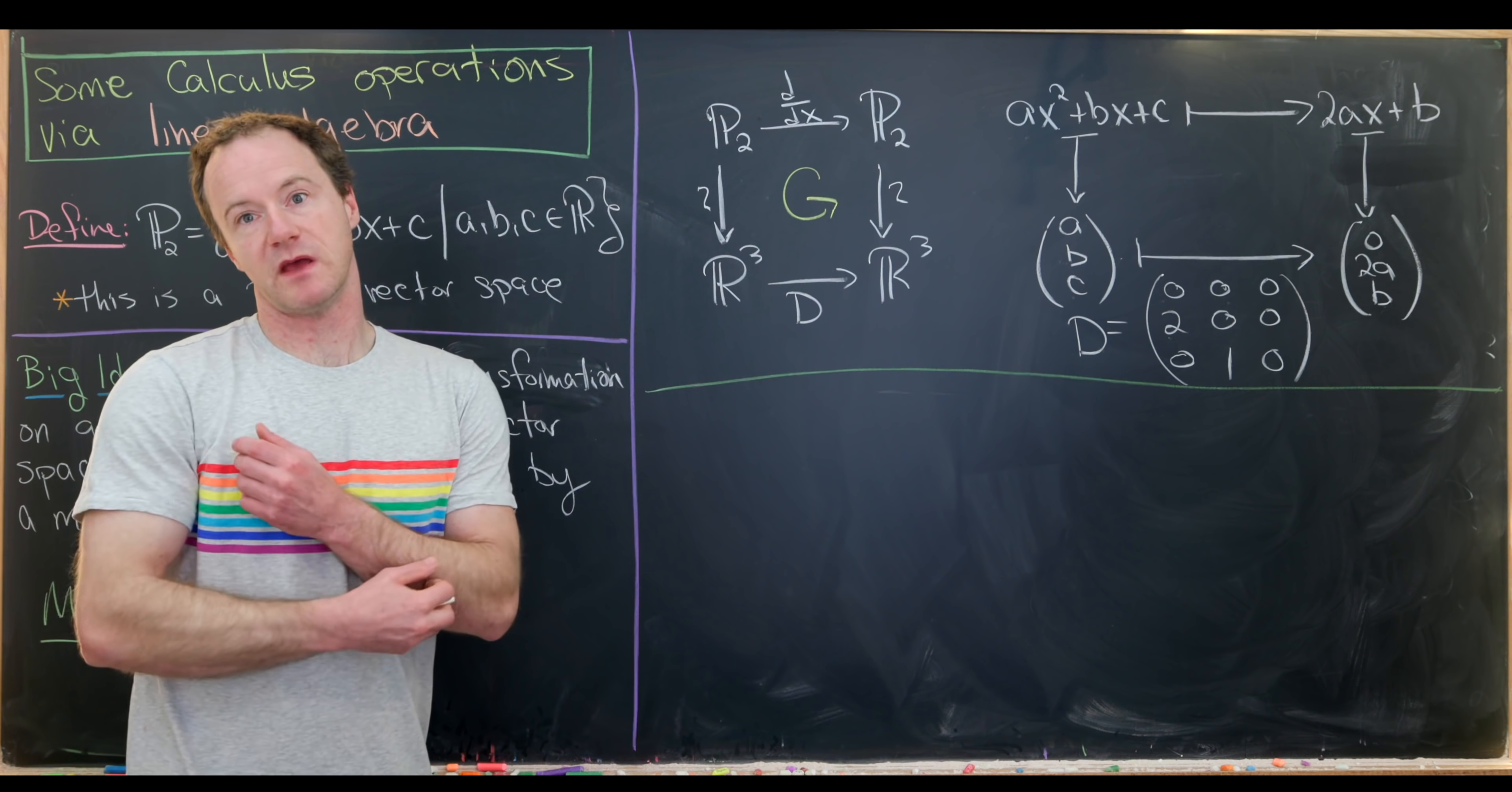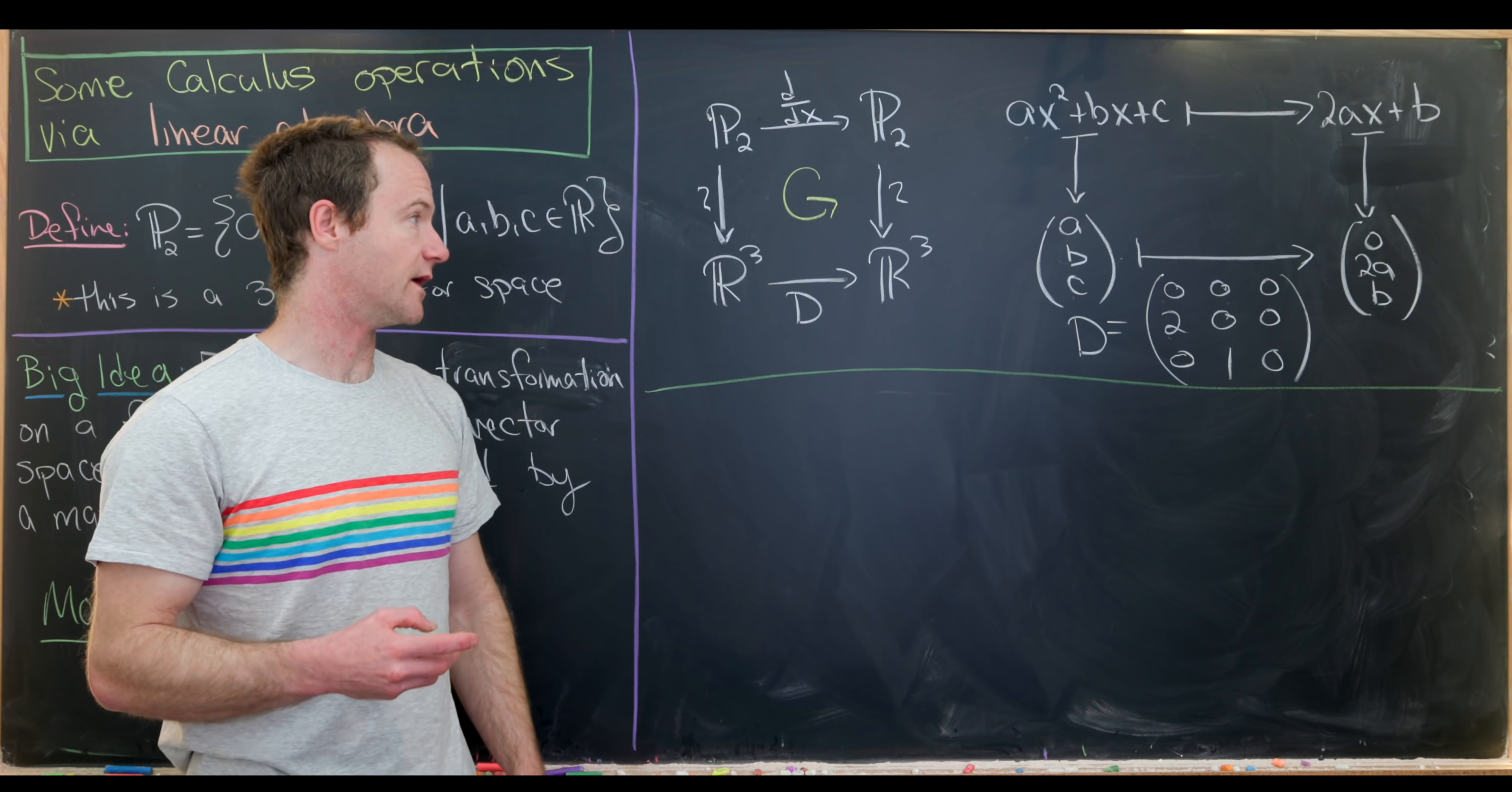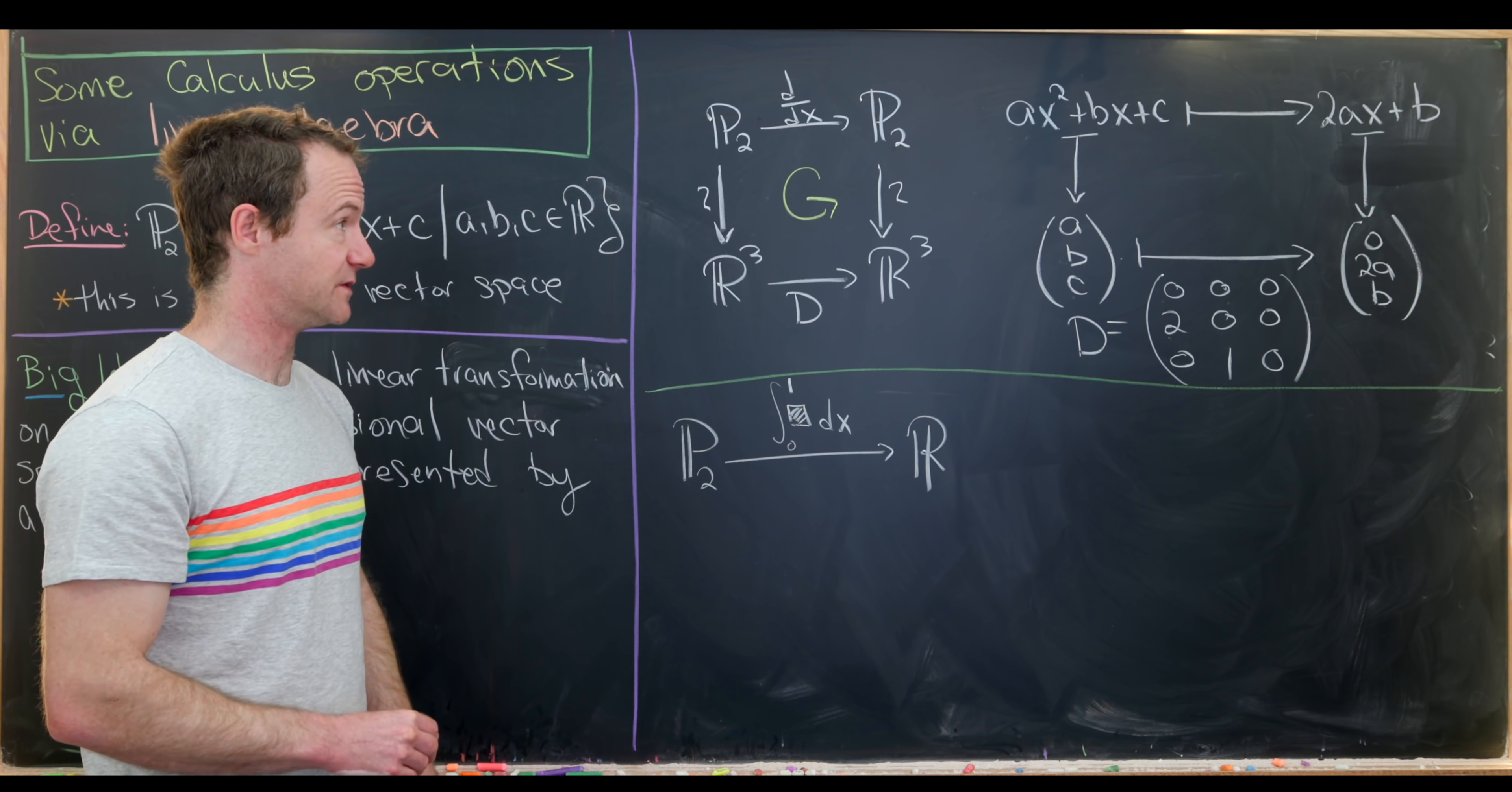Let's do one more example in this space of polynomials before we move on to another example. Maybe other than taking the derivative, the most classic thing to do would be to take the antiderivative. Taking the antiderivative is a little bit problematic because that'll give us a cubic polynomial. We could change the codomain to cubic polynomials, but maybe instead of taking the antiderivative, we will take a definite integral over a certain interval, maybe the interval 0 to 1. That'll make everything work out kind of nicely. So that'll give us a map from P2 to the real numbers.